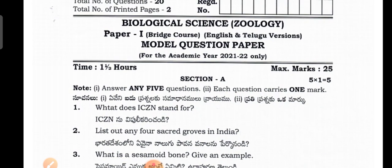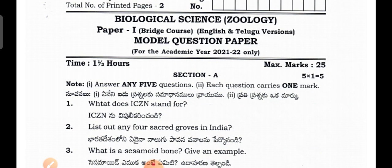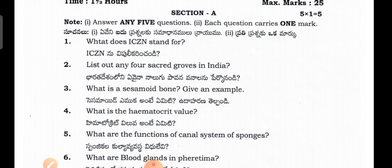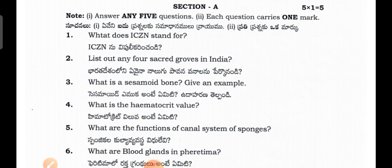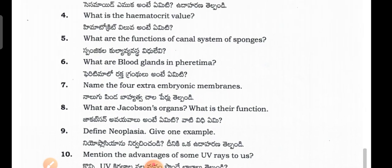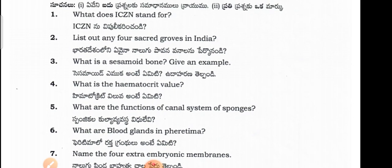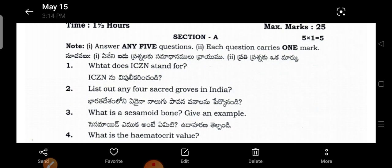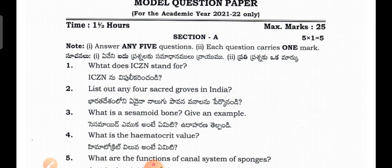Biological Sciences is nothing but botany and zoology. Botany in a separate booklet and zoology in a separate booklet. Let me show the question paper now — at the end I will show the answers in English version for English medium students. In Section A, 10 questions will be given and you have to attempt any five. In Section B also, 10 questions are given and you have to attempt any five. Section A carries one mark each and Section B carries four marks each.